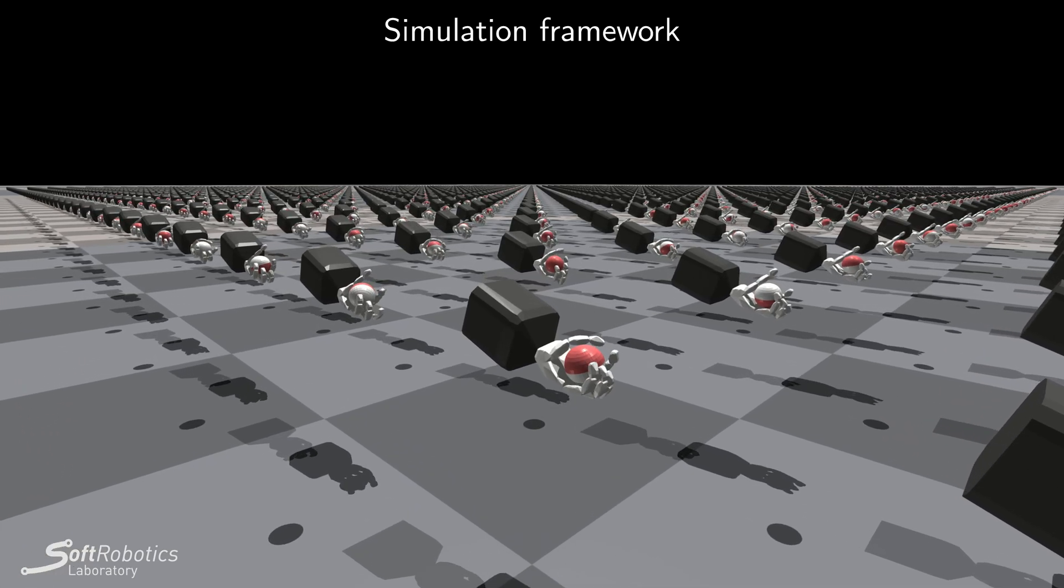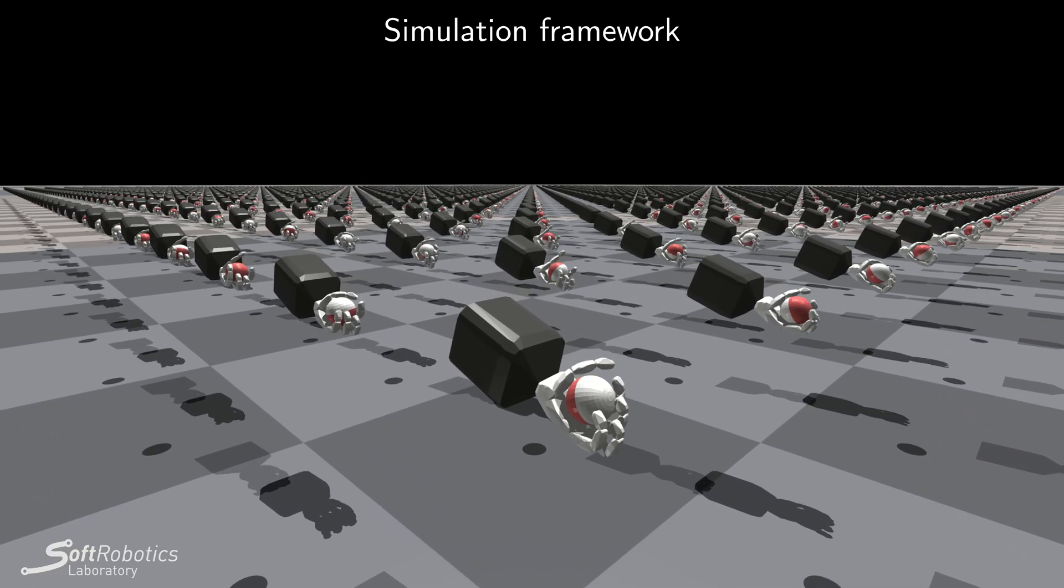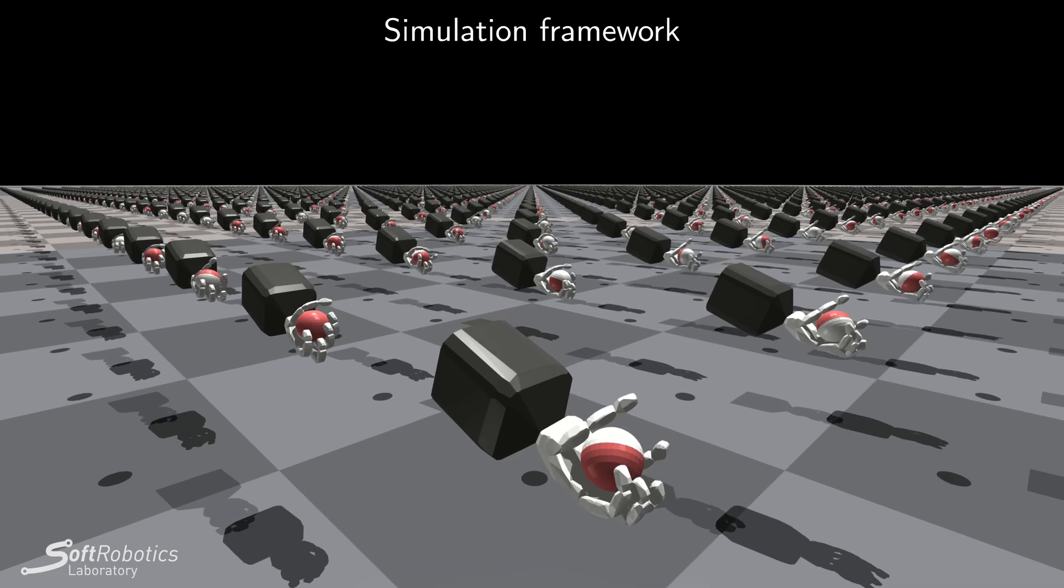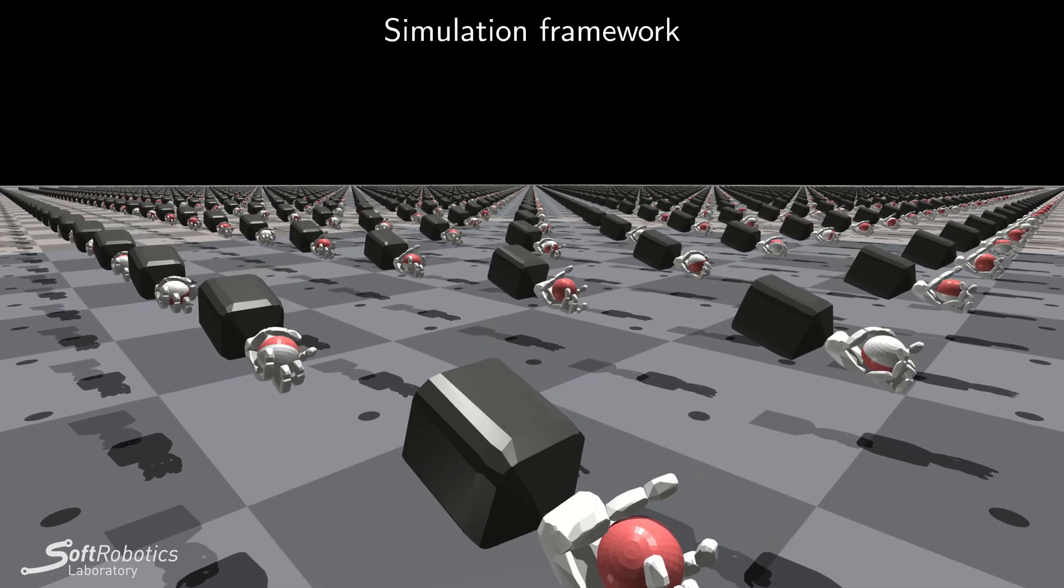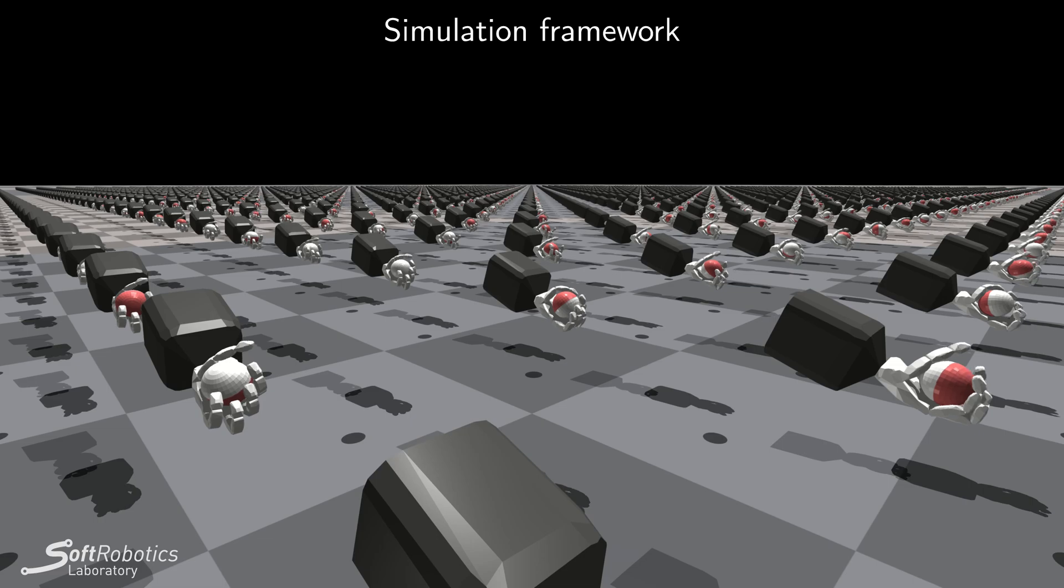This is the policy training visualized in Isaac Gym. We simulate 4096 hands in parallel for about an hour to obtain a policy that can be directly applied to the real robot.